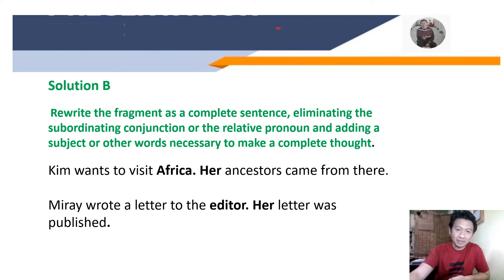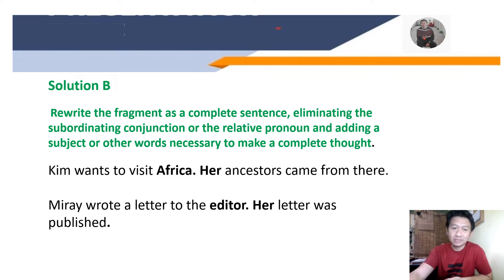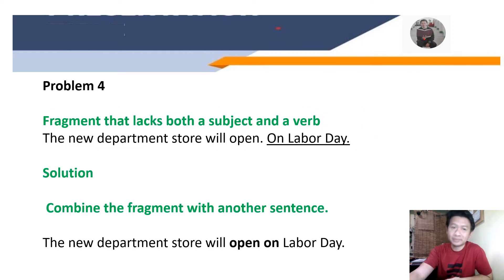Solution B: rewrite the fragment as a complete sentence — eliminate the subordinating conjunction or the relative pronoun, adding a subject or other words necessary to make a complete thought. For example: 'Kim wants to visit Africa. Her ancestors came from there.' 'Mirai wrote a letter to the editor. Her letter was published.'